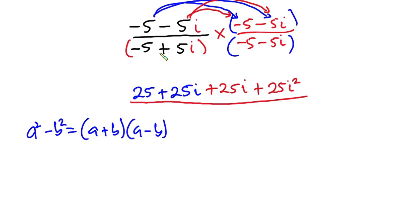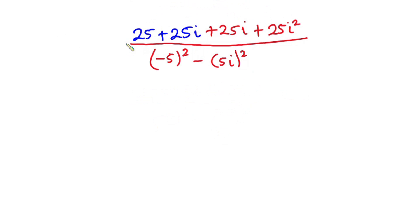So in place of this, I can rewrite this as negative 5 squared minus 5i squared. Now let's go ahead and then simplify this. We have 25. Then 25i plus 25i, that gives me 50i. Then we have 25i squared.